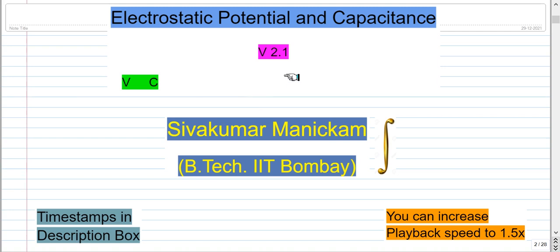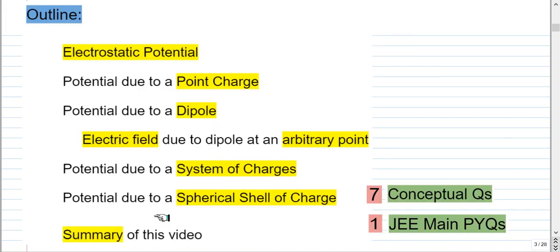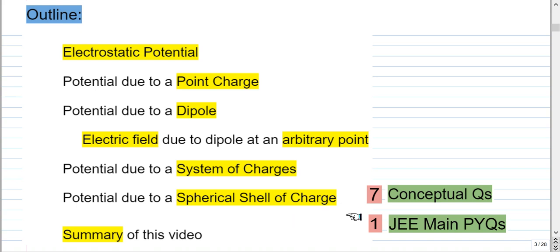This is video number one on electrostatic potential and capacitance. Timestamps are given in the description box — you can watch parts of the video if you are running short of time. In this video I will talk about electrostatic potential, how it is defined. I will find potential due to a point charge and due to a dipole, electric field due to a dipole at an arbitrary point, potential due to a system of charges, and also due to a spherical shell of charge. I will solve seven conceptual questions and one question from JEE Main PYQ, and finally I will summarize the video.